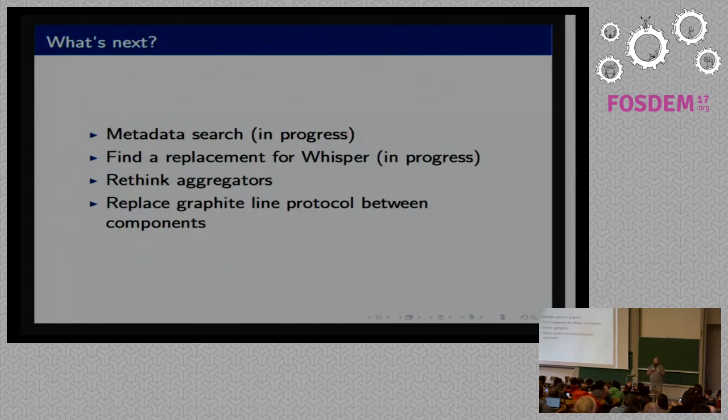We also have a lot of plans. We are currently working on getting some sort of metadata-based search for Graphite. In Graphite-compatible ways, so having tags. You want tags in 2017. We also want to find some replacement for Whisper. Whisper is a good balance in terms of read and write performance. But it always uses around 12 bytes per point to store your data. In 2017 we have a lot of white papers about some compression algorithms, a lot of other systems that implement them. We want to play with something that might allow us to reduce this to at least 8 bytes or maybe even less.